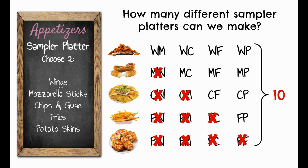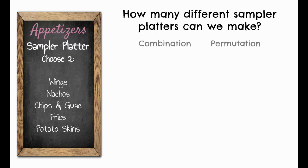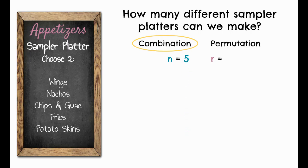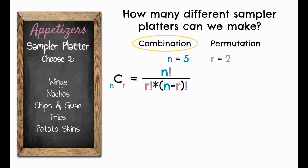Now let's do this using the combination formula. Before you start, think: is this a combination or a permutation situation? It's a combination because it just says choose two — it's not specifying a certain order. So we identify n and r. n is the total number of options: wings, nachos, chips and guac, fries, and potato skins — so n equals 5. r is how many we're picking, and our sampler platter says we choose two, so r equals 2.